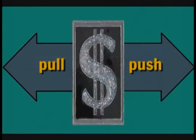Cost-push inflation happens when there is an increase in the cost to produce goods and services. These increased production costs could be increases in the cost of raw materials, energy, or any other item used in production. They also could be increases in wages, sometimes referred to as wage-push inflation or the price-wage spiral.